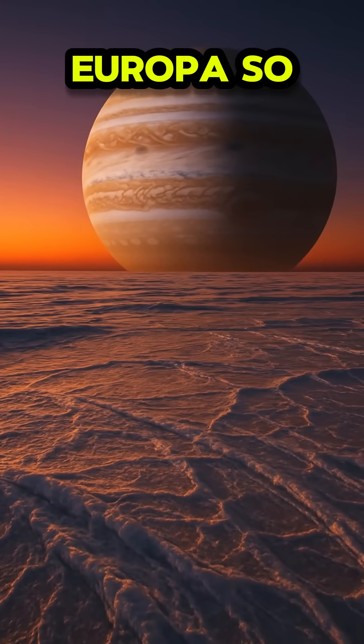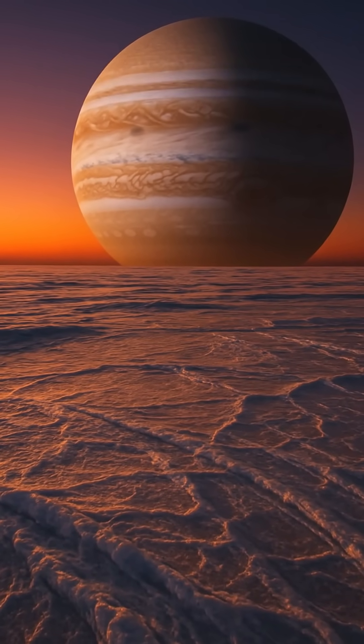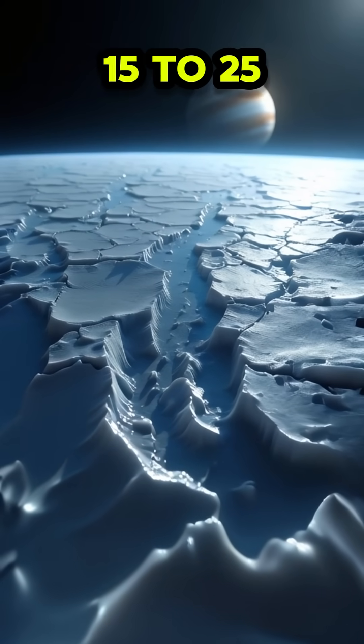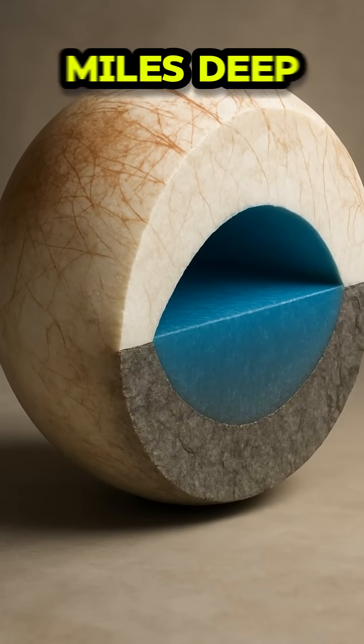What makes Europa so special? First, let's talk about its surface. Europa is covered in a thick layer of ice, estimated to be around 15 to 25 kilometers, about 9 to 15 miles, deep.